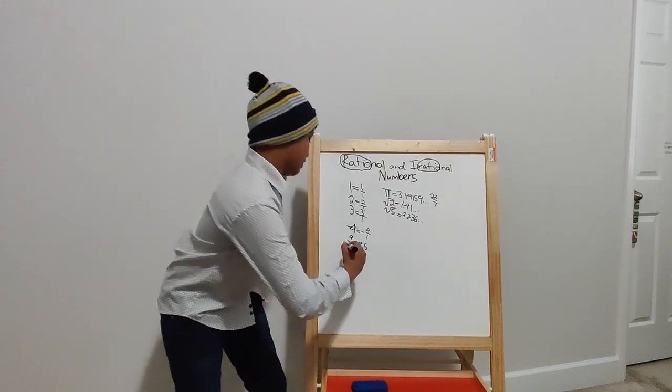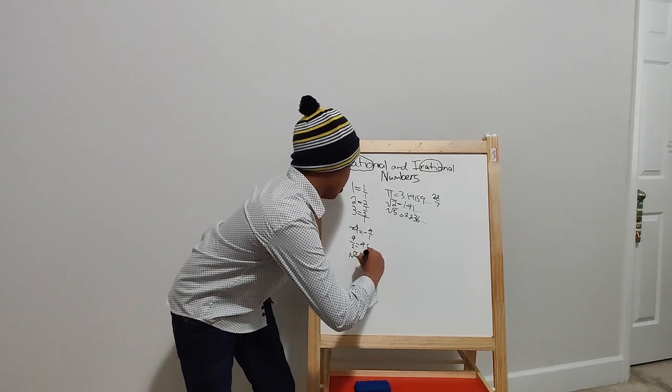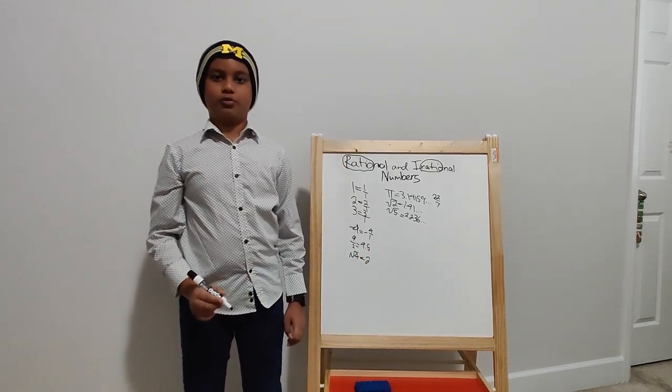You can also express the square root of 4 as a rational number because the square root of 4 is 2.